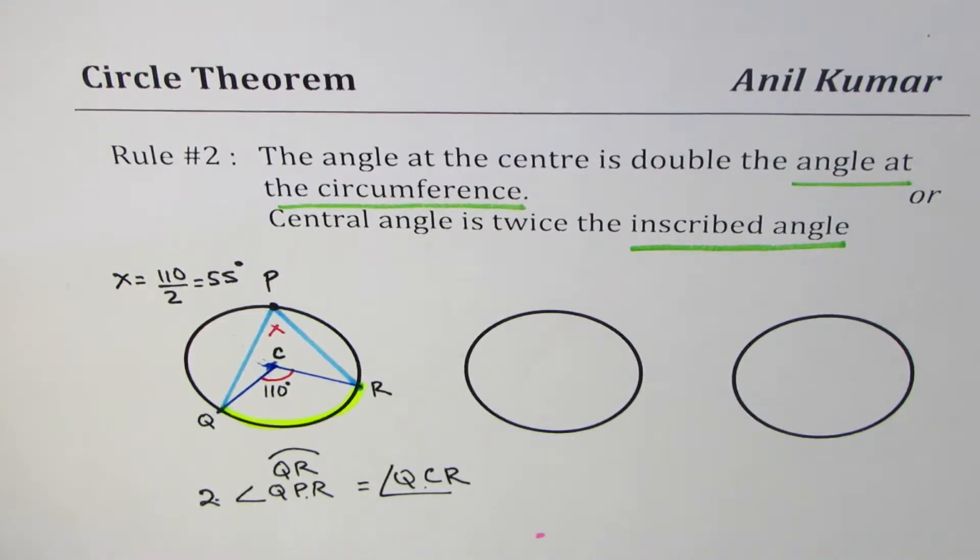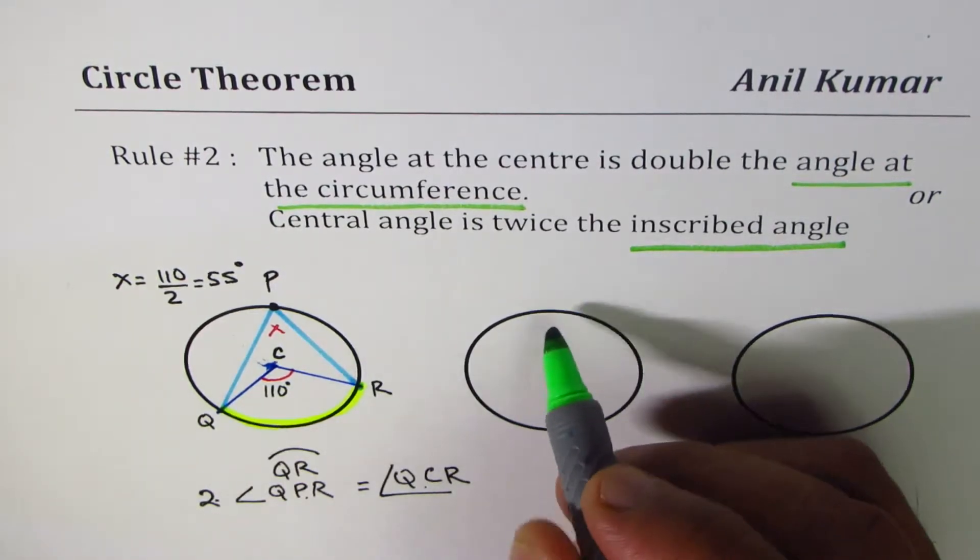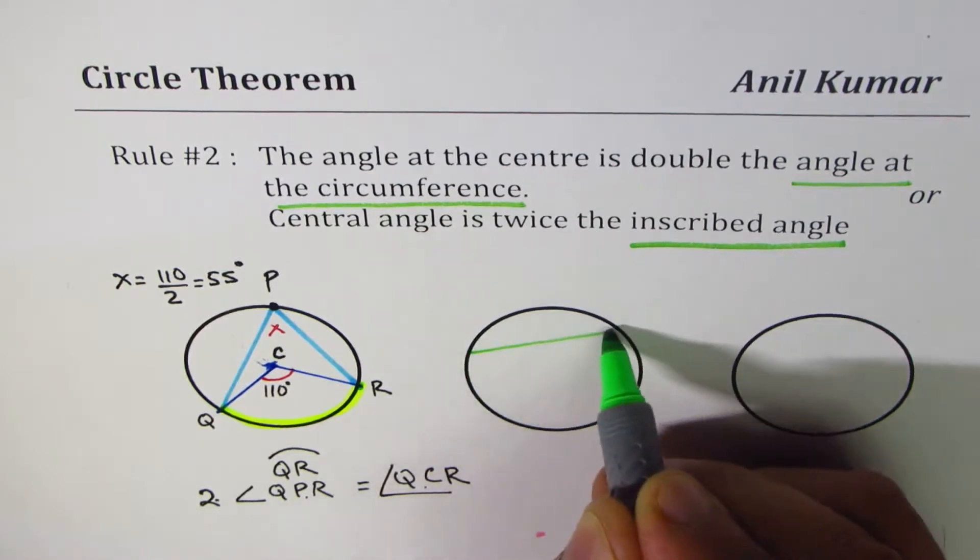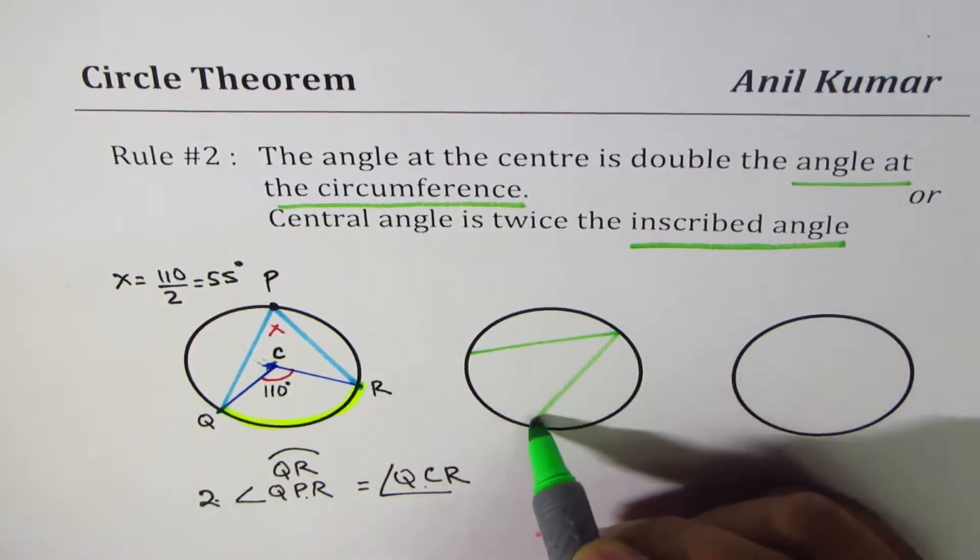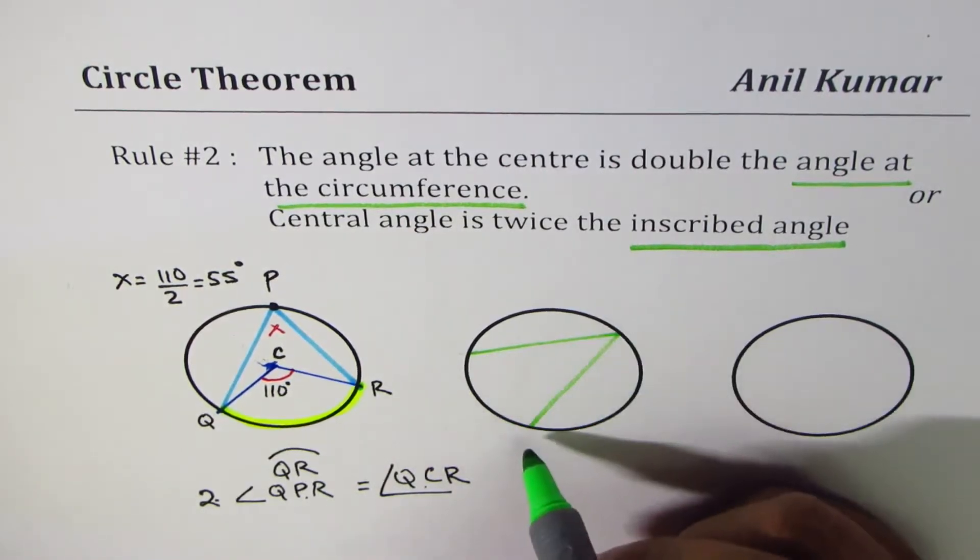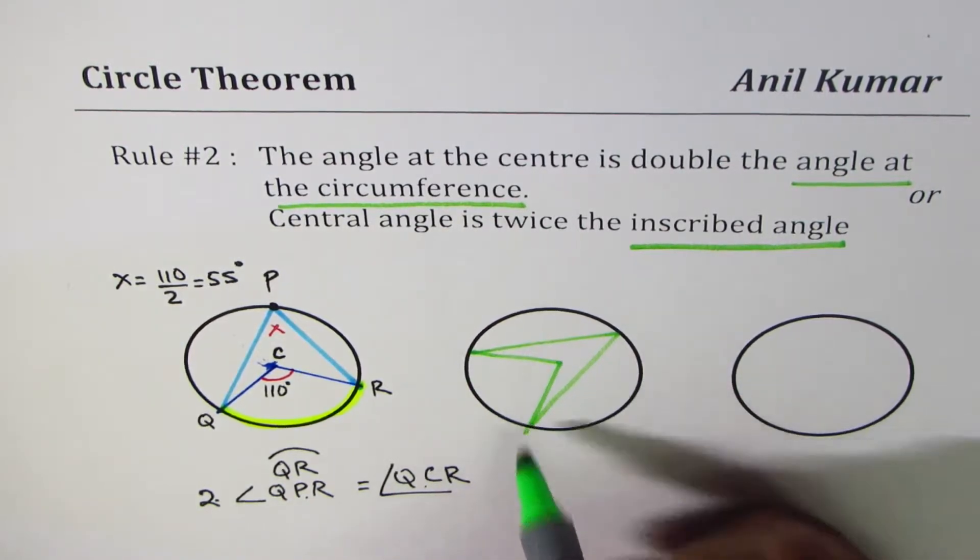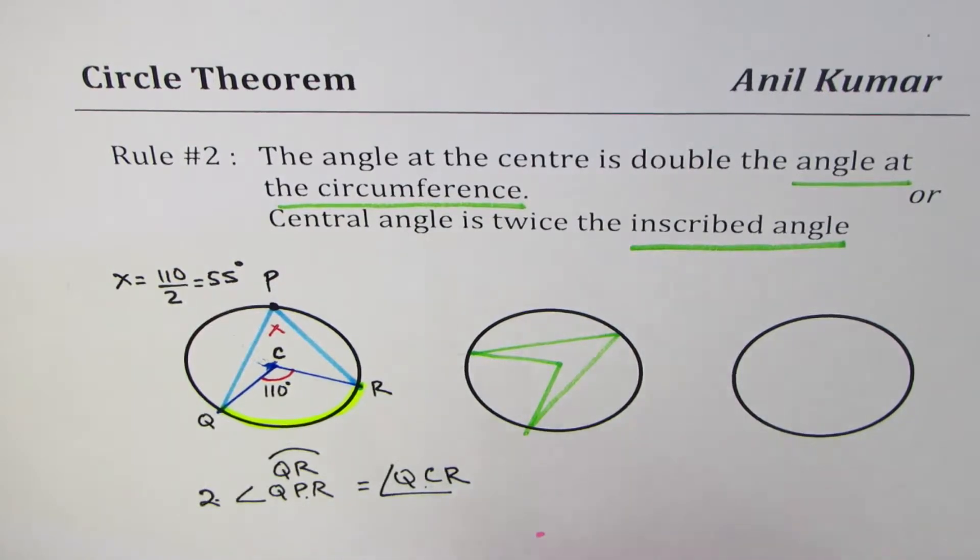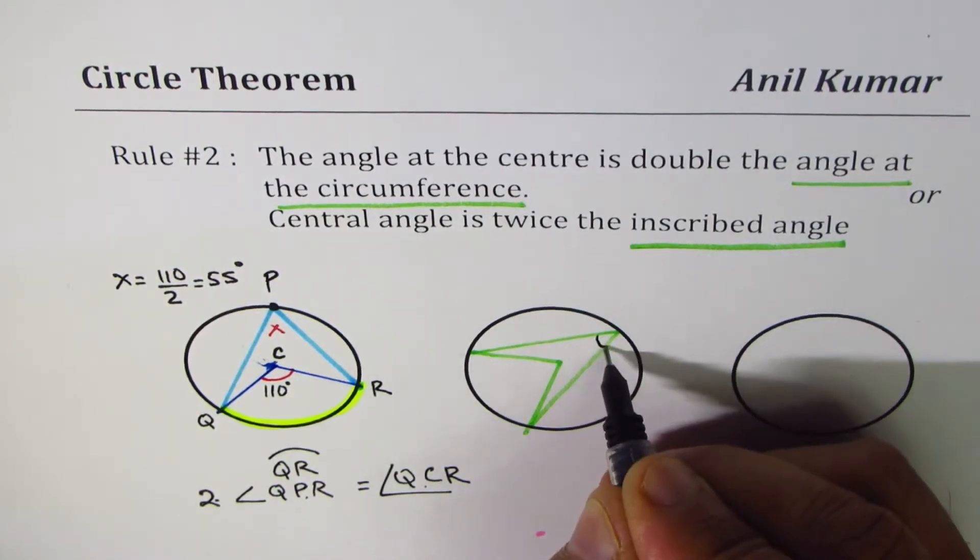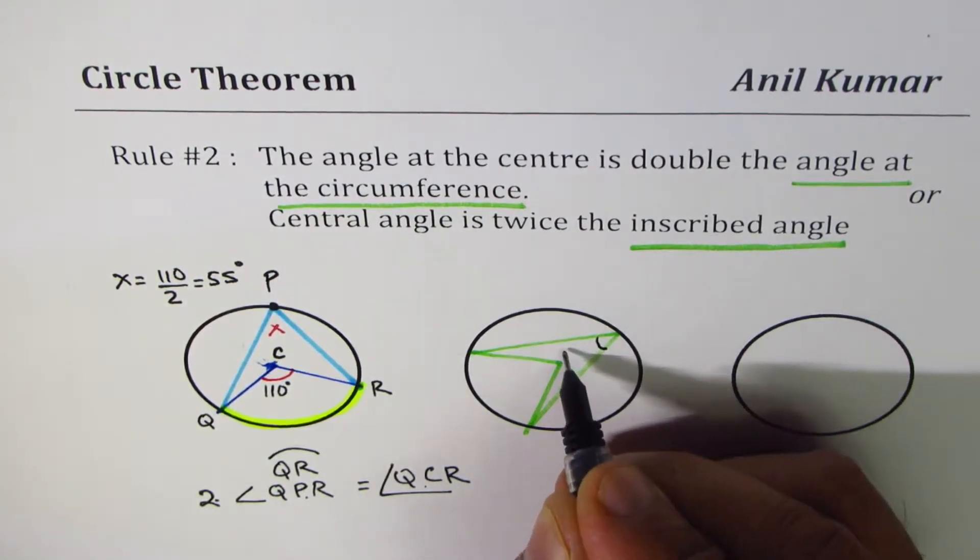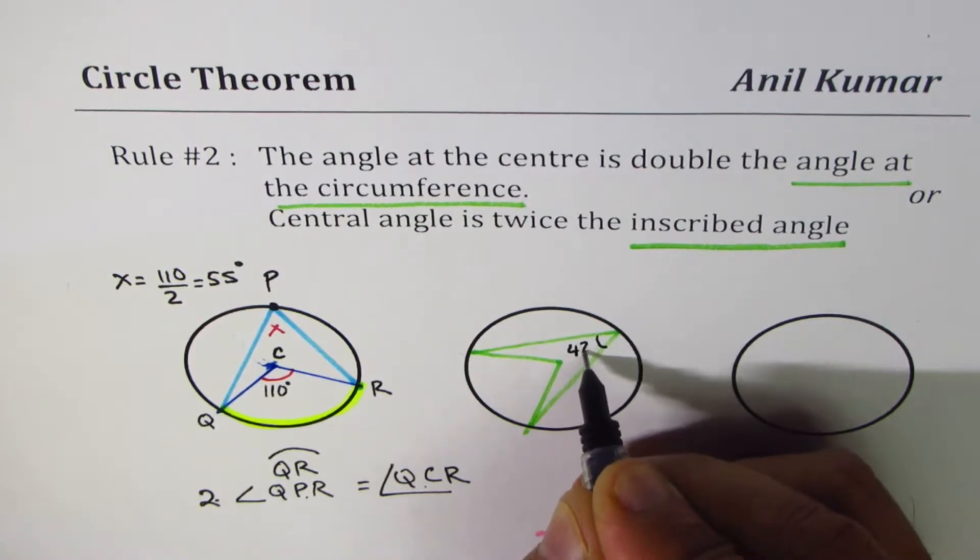So let me create another question here. I'll put it in kind of reverse fashion. Let's say this is the angle at the circumference, and the central angle is kind of like this. And here, if I give you this angle as, let's say, 42 degrees,